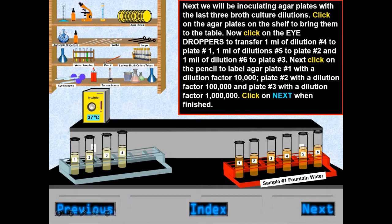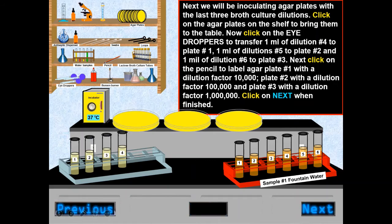Next, the agar plates were inoculated with the last three broth culture dilutions. The eye dropper was used to transfer 1 ml of dilution number 4 to plate number 1.